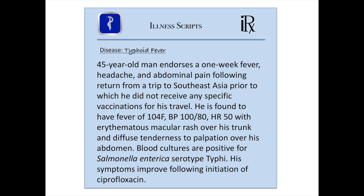An ideal illness script for typhoid fever would be a 45-year-old man who endorses a one-week history of fever, headache, and abdominal pain following return from a trip to Southeast Asia, prior to which he did not receive any specific vaccinations for his travel. He is found to have a fever of 104 degrees Fahrenheit, blood pressure of 100 over 80, heart rate of 50, with an erythematous macular rash over his trunk, and diffuse tenderness to palpation over his abdomen. Blood cultures are positive for Salmonella enterica subtype typhi, and his symptoms improve following initiation of ciprofloxacin.